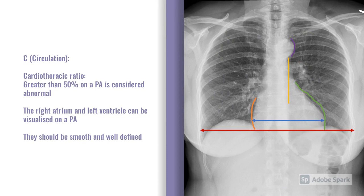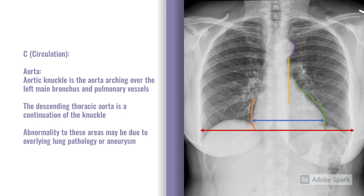Moving on to C — circulation. We're particularly looking at the cardiothoracic border. Ideally, assess this on a PA x-ray, as the AP distorts the size of the heart. If the heart is greater than 50% of the thoracic diameter, that's considered pathological — suggestive of cardiomegaly. We can visualise the right atrium and left ventricle borders; they should be smooth and well defined. If they're not, that more likely suggests overlying lung pathology rather than a cardiac issue. Key things to also pick up are the aortic knuckle and the descending thoracic aorta — a widened mediastinum may be due to an aortic aneurysm.